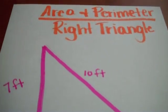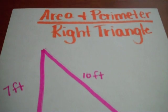Hello everybody. Today we're going to be talking about how to find the area and perimeter of a right triangle.